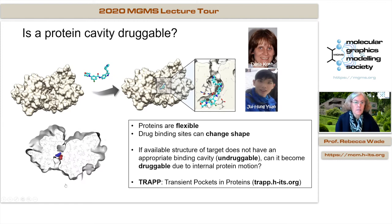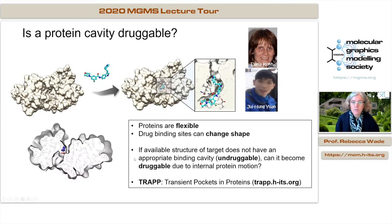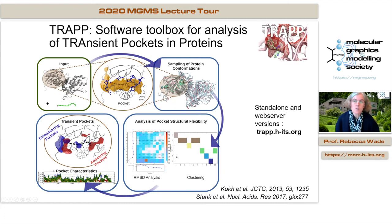With TRAPP, we consider the dynamics of a binding site and whether it's druggable. We've introduced a druggability score in TRAPP, which was largely the work of Jiewu Sheng and Daria Kopp, a senior postdoc in the group. TRAPP is available as a web server or standalone tool, and it works with the assumption that you know the region of the protein you're interested in — it's not for de novo finding binding pockets. It maps out the shape of the pocket using a grid-based procedure, can generate or accept multiple conformations, clusters them, and looks for disappearing and appearing sub-pockets.